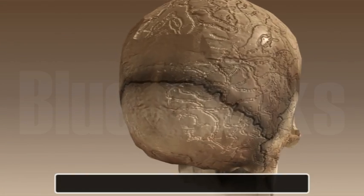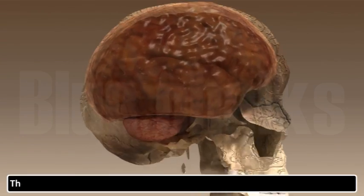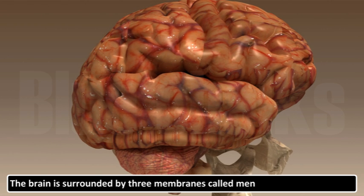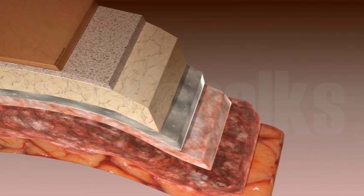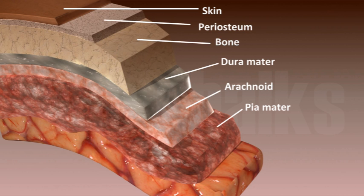Let us study the structure of the brain first. The brain is located inside the skull of the body. It is protected by a bony box in the skull called the cranium. The brain is protected inside the cranium as it is a soft part of the body. It controls the functioning of almost all organs in the body. The brain is surrounded by three membranes called meninges which protect it.